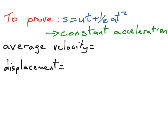This is the second of our proofs of the linear equations of motion. We're going to derive the displacement formula. The formula is s equals ut plus one-half at squared.